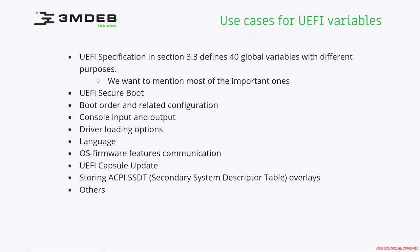The OS firmware features communication group of variables is very interesting because it provides means of communication between firmware and the operating system about features which are supported by one or the other side. Use of those variables may be very interesting to security researchers because those variables have the potential of changing operating system behavior or firmware behavior.